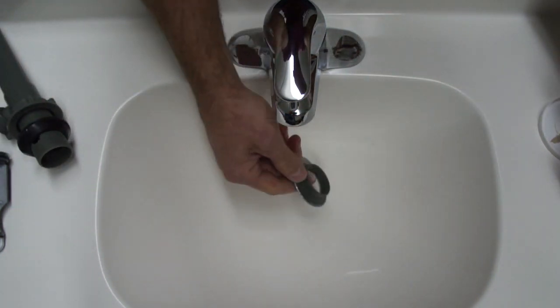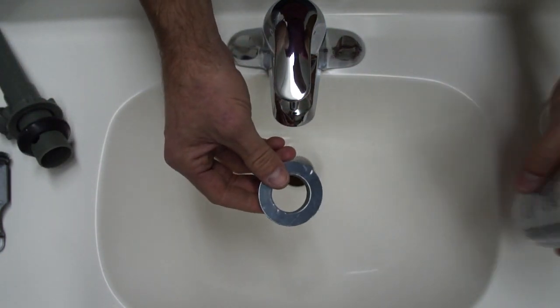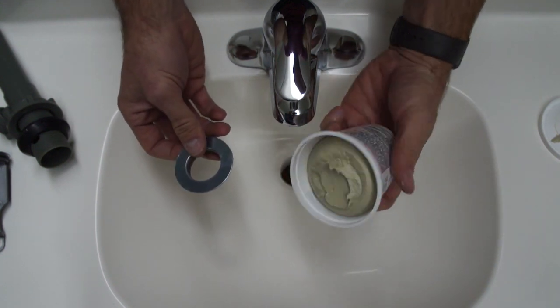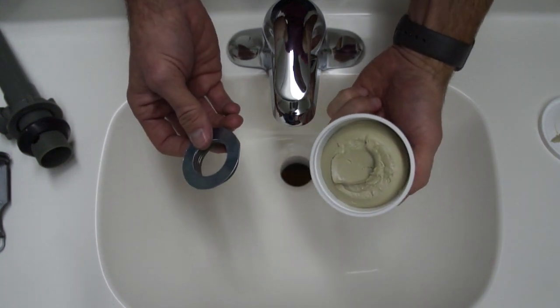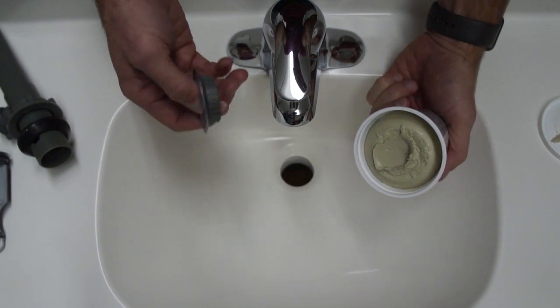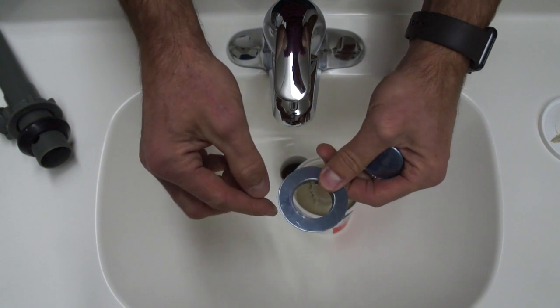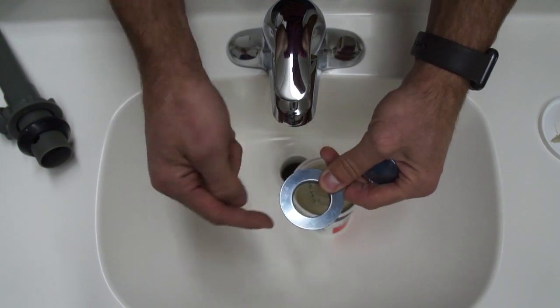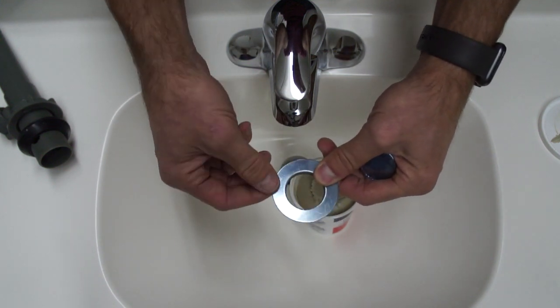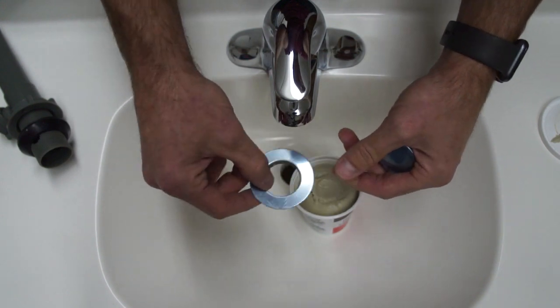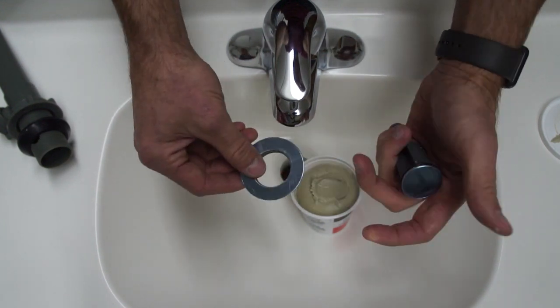The top side is where you use the plumber's putty. What this does is when you pull the stopper, so when the stopper is down and you're trying to keep water in the sink, it keeps it from allowing water to go around this part and down the sink. So it keeps the water in the sink when you've got the stopper plugged.